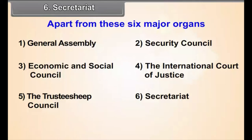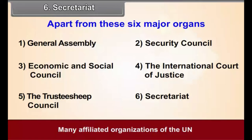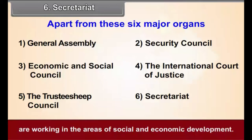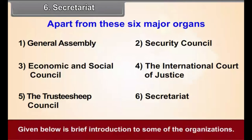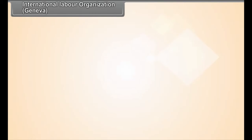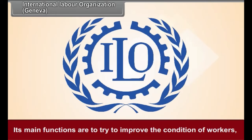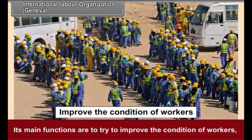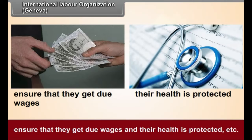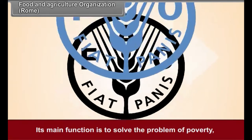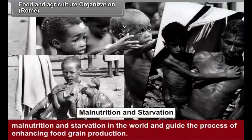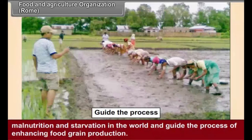Besides these six major organs, many affiliated organizations of the UN are working in the areas of social and economic development. The International Labour Organization, based in Geneva, works to improve the condition of workers, ensure that they get due wages, and that their health is protected. The Food and Agricultural Organization, based in Rome, works to solve the problem of poverty, malnutrition, and starvation in the world, and guide the process of enhancing food grain production.